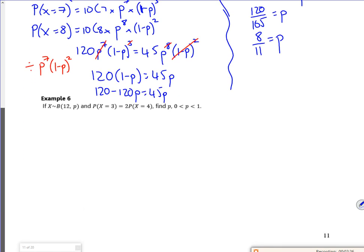Right, let's have a look at this one then. So it tells you that the probability that X is 3 is 2 lots of the probability that X is 4. Right then. So N is 12, so the probability that X is 3, so it's 12C3, then P cubed 1 minus P to the 9.